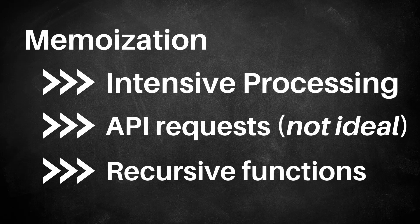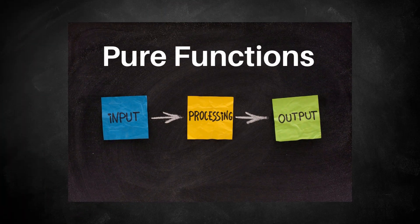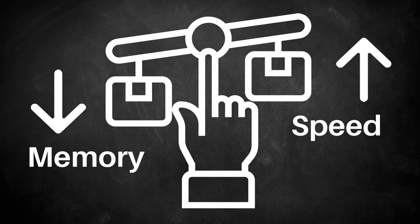As a best practice, memoization should only be added to pure functions. That is, given the same inputs, a pure function should always provide the same output. Memoization also comes at a cost — you're trading memory for speed. Let's look at some examples.